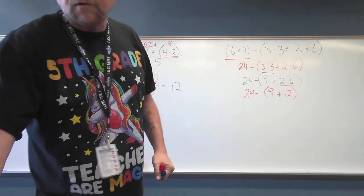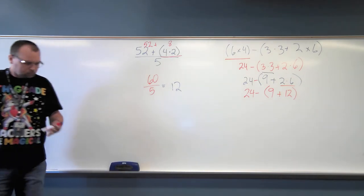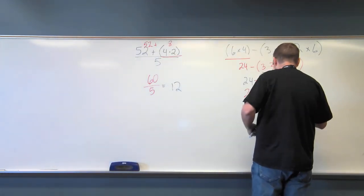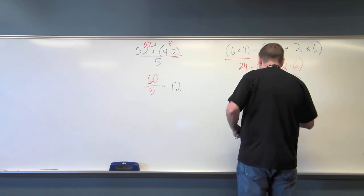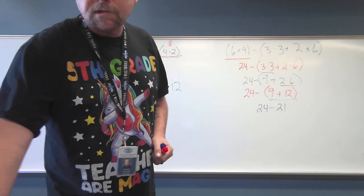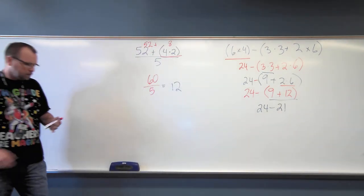And so what do I do next, A.J.? Add nine plus twelve. And what is nine plus twelve? Twenty-one. Now I just have one operation left. Let's leave this to the experts. Jackson, what is twenty-four subtract twenty-one? Three.